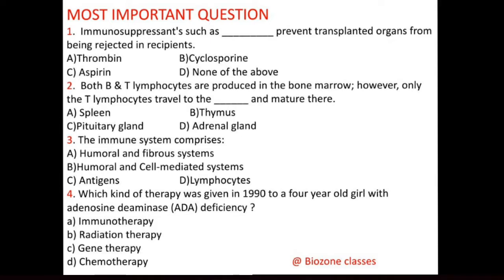Question number 4: Which kind of therapy was given in 1990 to a 4-year-old girl with adenosine deaminase (ADA) deficiency? Options: A. Immunotherapy, B. Radiation therapy, C. Gene therapy, D. Chemotherapy. This is one of the most important questions. The correct option is gene therapy.